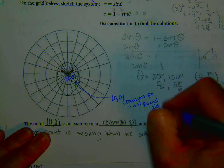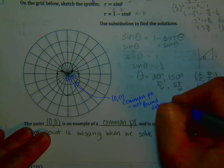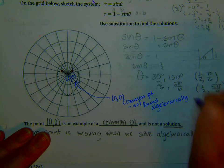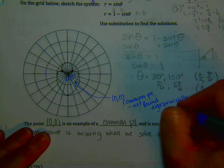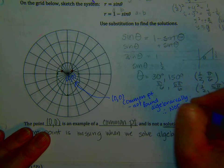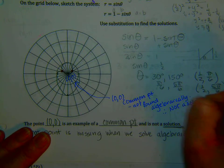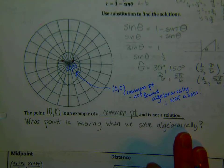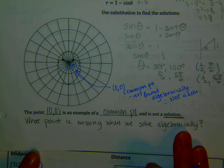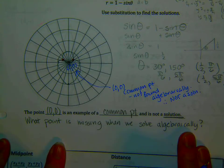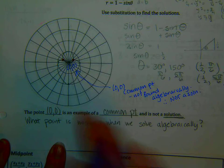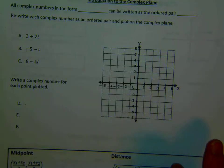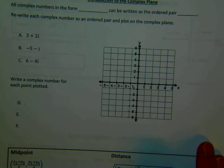When we solved for theta, we didn't find it. Therefore, it's just a common point - it is not a solution. Not found algebraically, therefore not a solution. So what point is missing when we solve algebraically? (0, 0). Therefore it's a common point, not a solution.